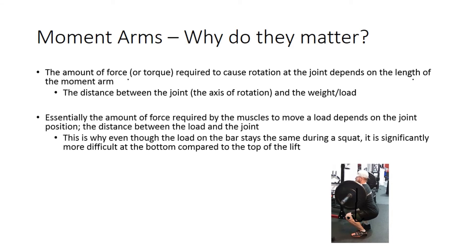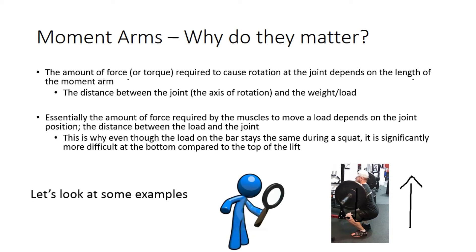The amount of force required by the muscles to move a load depends on joint position — specifically the distance between the load and the joint. This is why, even though the load on the bar is the same throughout a squat, it's significantly more difficult at the bottom. The distance between the joint and the load is greatest at the bottom; as we stand up that distance is reduced — a shorter moment arm means less force required.